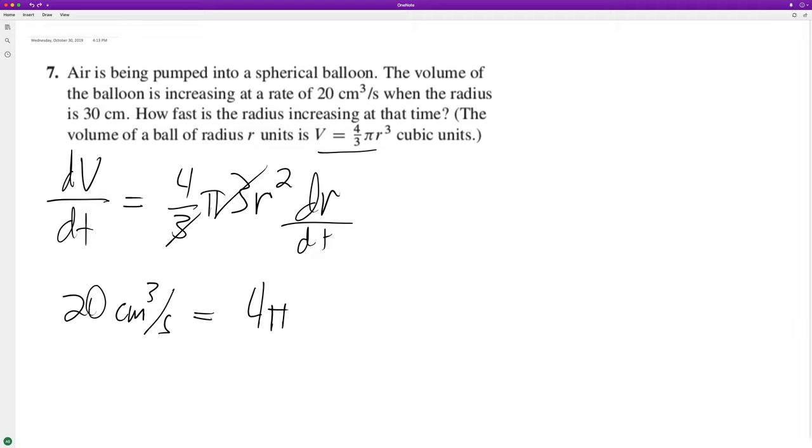The radius is 30 centimeters, so 30 squared equals 900 centimeters squared times dr/dt.